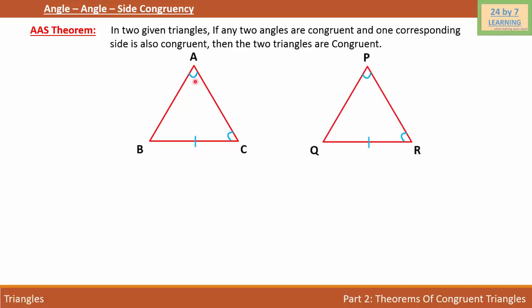As you can see, angle A is congruent to angle P and angle C is congruent to angle R and one side BC is congruent to QR.